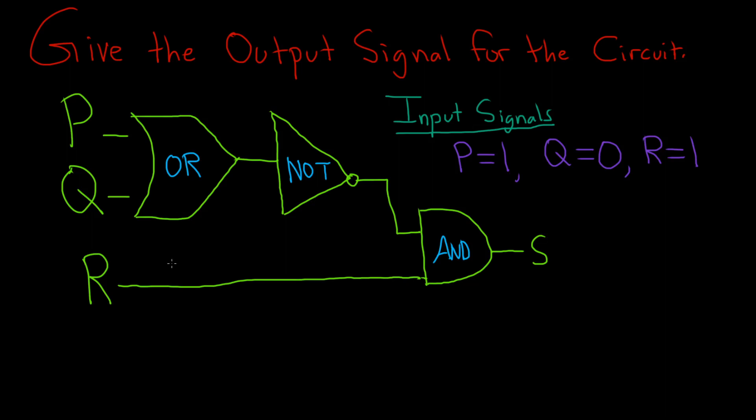Give the output signal for the circuit. So we have the following input signals: 1, 0, and 1.